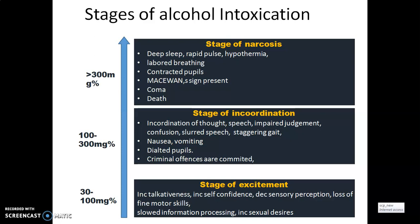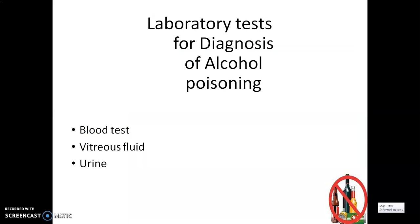When the concentration is more than 300 mg percent, the stage of narcosis is observed. Symptoms include deep sleep, rapid pulse, hypothermia, labored breathing, contracted pupils, and even Macewen's sign can be present. Coma can also be observed at concentrations of more than 300 mg percent.